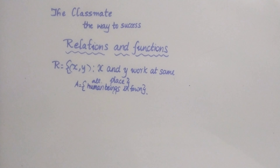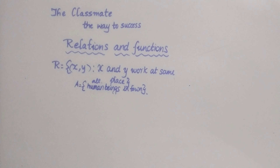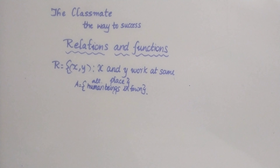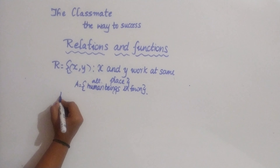Let us start the video. The question here is: R = {(x, y) such that x and y work in the same place}, and the set A is equal to all the human beings in a town. We have to prove whether this relation is reflexive, symmetric, or transitive.